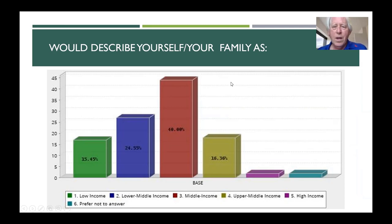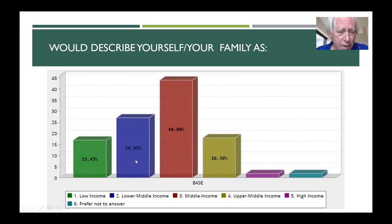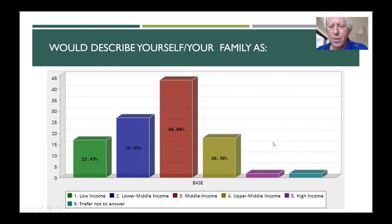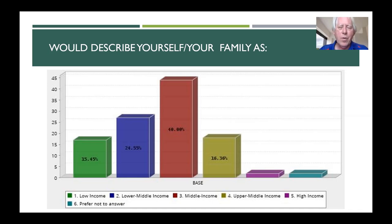Here's a question that indicates financial resources — it asks how would you describe yourself or your family in terms of your income. We have 15 percent who say they're low income, 25 percent lower middle income, 40 percent middle income, with upper middle income and higher levels below that. So we're not talking about a school where everyone's family income is very high, and many of our students — especially in the school of social work — are working and unable to devote time to extracurricular activities between their job, school, and family.